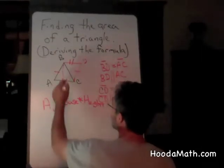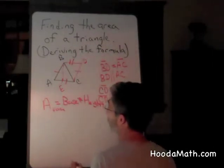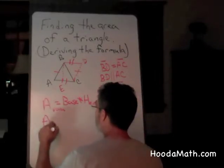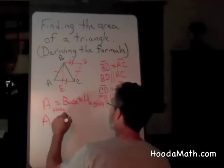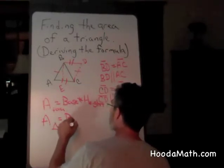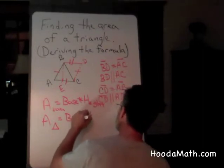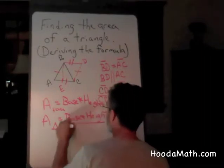But we only want to find the area of the triangle. Since two triangles create the parallelogram, the area of the triangle equals the base times the height divided by two.